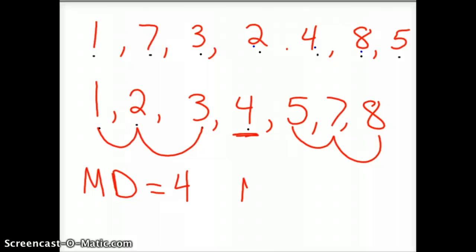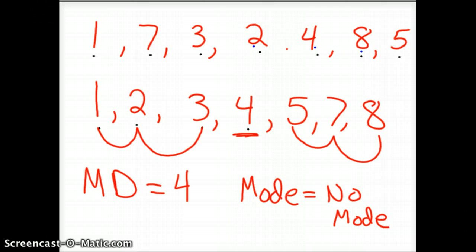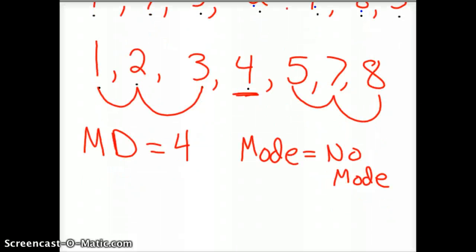Mode. In our case, this is kind of nice, there is no mode. Nothing occurs, everything occurs the same number of times. Everything occurs one time. So the mode is none. Be careful that you don't use the word zero. Zero would mean that there's a number.